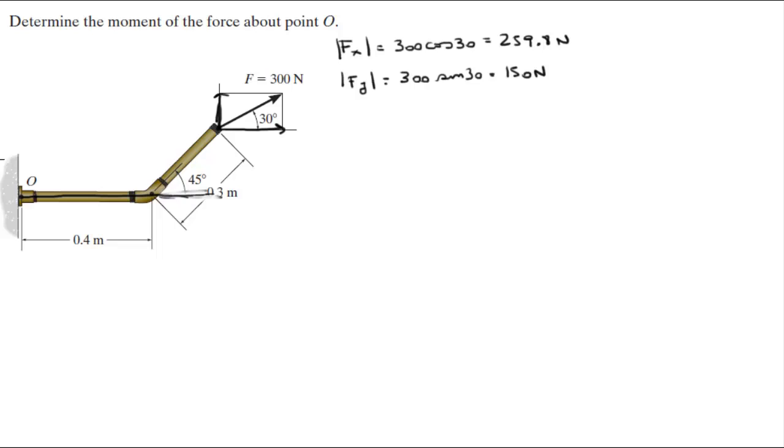It goes all the way to here, and the other lever arm goes all the way to here. So basically, this lever arm is going to be pulled by this force of 259.8 newtons, and this lever arm is going to be pulled this way by this force of 150 newtons.